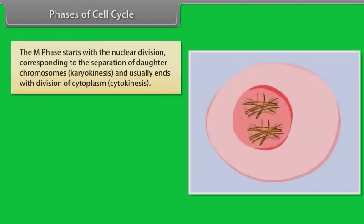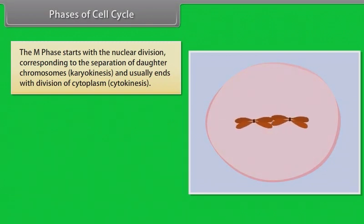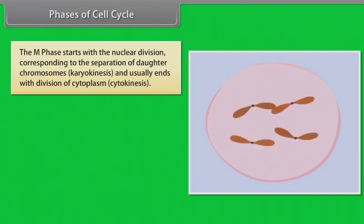The M phase starts with the nuclear division, corresponding to the separation of daughter chromosomes, karyokinesis, and usually ends with division of cytoplasm, cytokinesis.